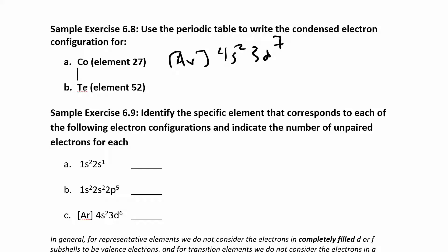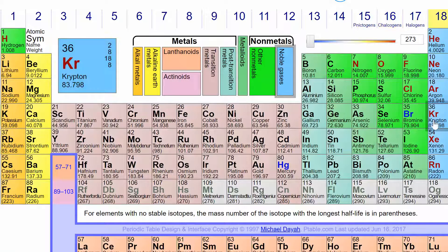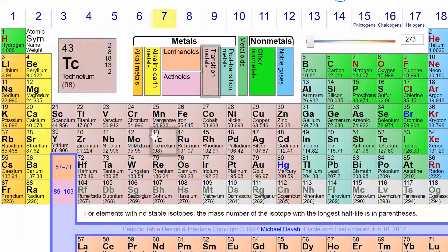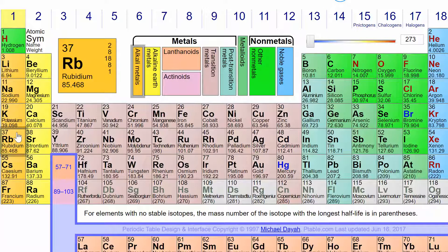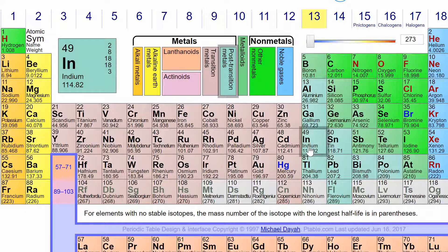Tellurium, which is element 52. Element 52 is down here. So you're going to go up one row to krypton, and then you are in row five. So then we have 5s2, and now the D block starts at four. So 4d10, that's completely full, and then back over to 5p, and then 5p one, two, three, four.